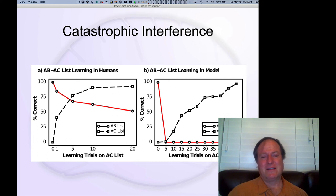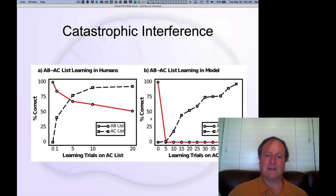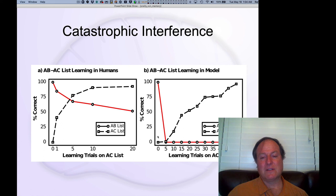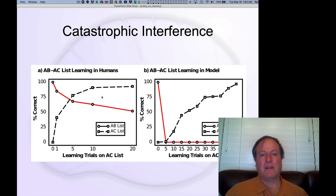This was right before I started grad school. When I got into grad school, I started looking at this problem and working with my advisor, Jay McClelland. We worked on a solution to this problem that basically says: if you look at a standard neural network, it suffers this catastrophic level of interference. But if you work with different sets of parameters in those networks, you can actually rescue this interference. And this became the complementary learning systems model that we'll talk about in a second.